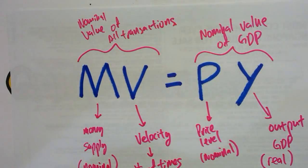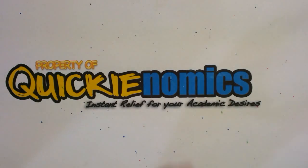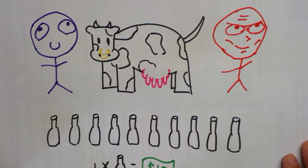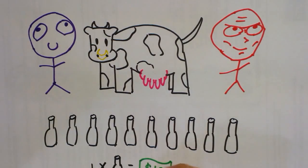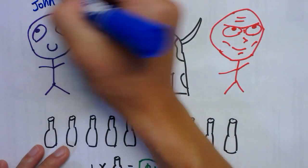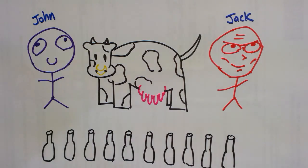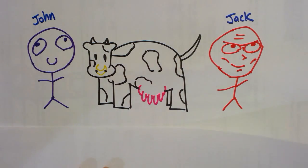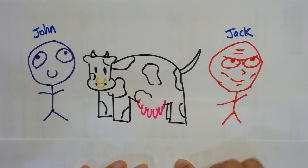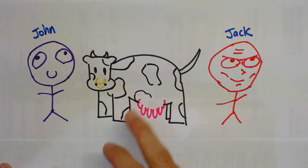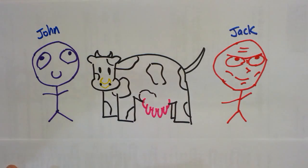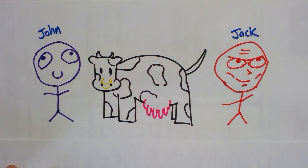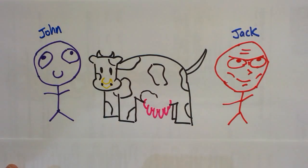Now I'm going to go into a little story about how this equation was formed — my own version of it. There were two friends: we'll call them John and Jack. John and Jack were two enthusiastic entrepreneurs with a business idea. They had a cow that produced excellent milk, and they wanted to travel somewhere far away where there were no cows so they could sell bottles of milk produced by this cow.